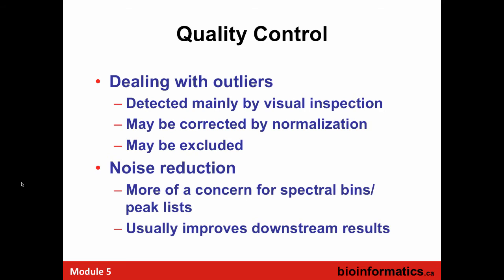Noise reduction is similar to the model where you had a bunch of features — you do the separation for isotopes, adducts, and remove those things — going from 15,000 features to 2,500 features. That's noise reduction. Different ways of doing it, different approaches. You could do it within MetaboAnalyst or outside of MetaboAnalyst.